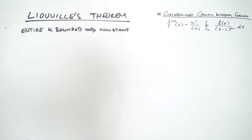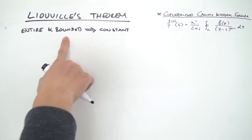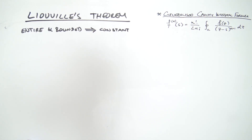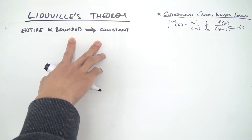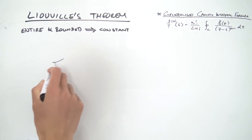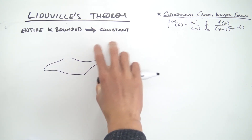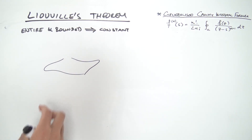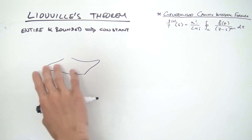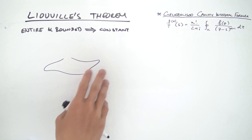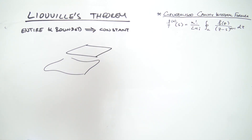Today we are going to be proving Liouville's theorem, which states that if a complex function is entire and bounded, then it must be constant — recall that 'entire' means differentiable or holomorphic everywhere in the complex plane. This is a bit counterintuitive when you first meet it, because you might imagine that a bounded function you can differentiate everywhere could have some curvature, but it turns out the only way this can happen is if it's constant, or completely flat.